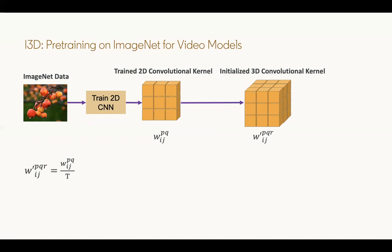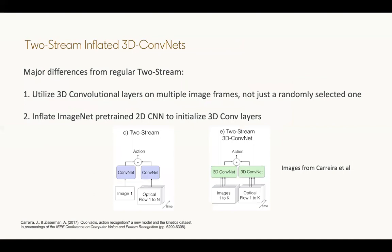The same idea can be applied to two-stream networks. First, instead of just randomly picking a frame from a video, you can consider multiple frames for both the spatial and temporal streams. Now what this will do is this actually lets us use 3D convolutional layers for both the spatial stream and the temporal stream. And now another contribution for two-stream inflated 3D convolutions is that for that 3D CNN, we can initialize them by using that same technique of inflating 2D CNNs to 3D CNNs, and pre-training the 2D CNN on ImageNet.